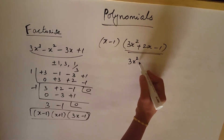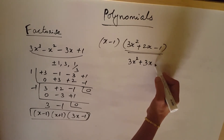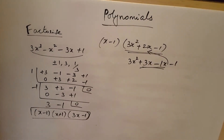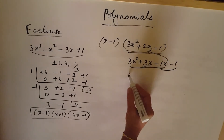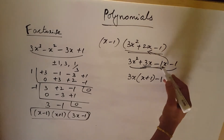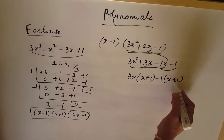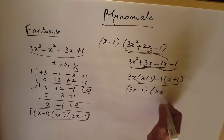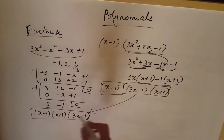For the grouping method: 3x squared plus 2x minus 1 — we can write 3x minus 1 times x minus 1. Taking 3x common from the first two terms: 3x times x plus 1, then minus 1 common from the last two: minus 1 times x plus 1. So the common factor is x plus 1, giving 3x minus 1 times x plus 1. This way also you can do it.